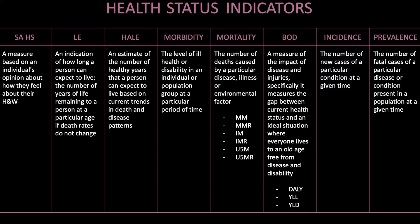DALY is a measure of burden of disease. One DALY equals one year of healthy life lost due to premature death or time lived with illness, disease or injury. YLL — years of life lost — is the fatal component: years of life lost due to premature death. YLD — years lived with disability — is the non-fatal component: years lived in disability due to illness, disease or injury. Incidence is the number of new cases of a particular condition at a given time, and prevalence is the number of existing cases of a particular disease or condition present in a population at a given time.